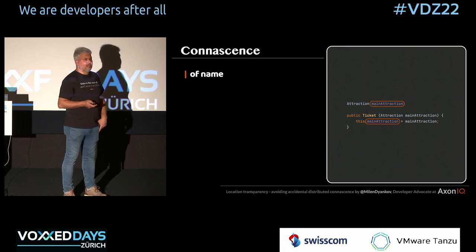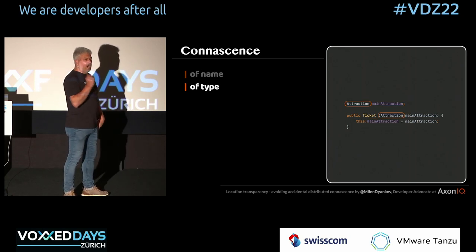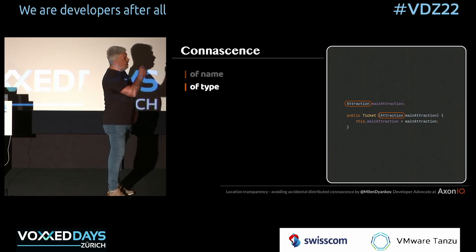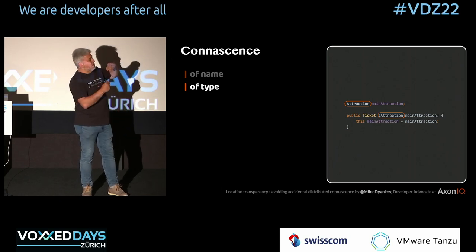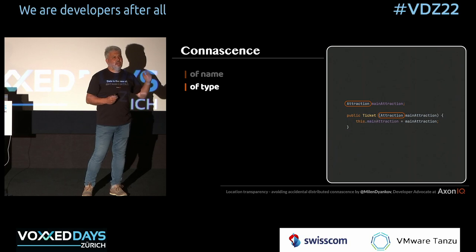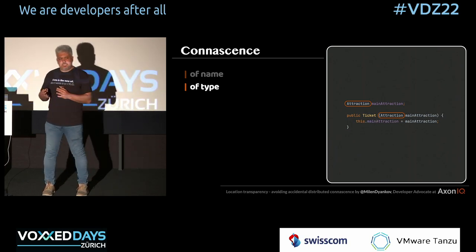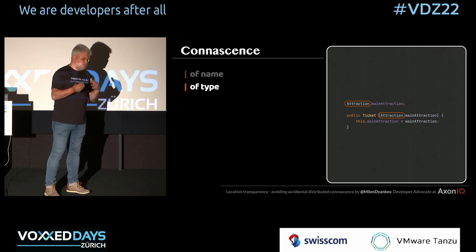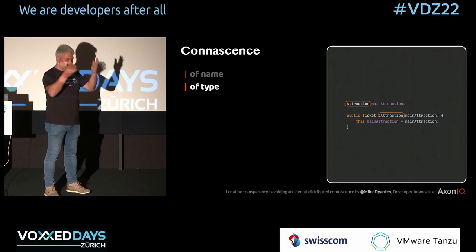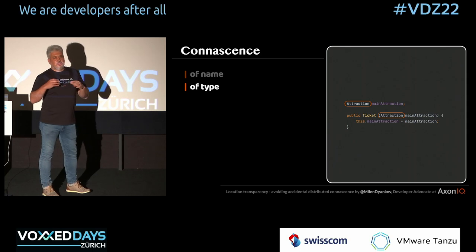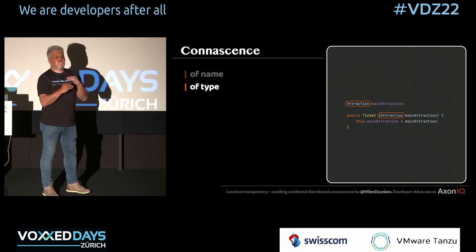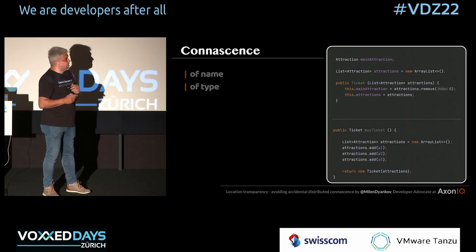There's another one - can you spot it? There's a connescence of type. You cannot change the type of the function argument without changing the type of the thing that you pass in. Every time you change the type in one place, you have to change the type in another place. That's something very easy these days to do because most IDEs and tools can do this for us. That's why connescence of type and connescence of name are typically what we call lower connescence - very easy to deal with.